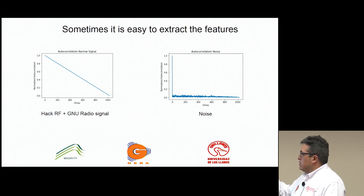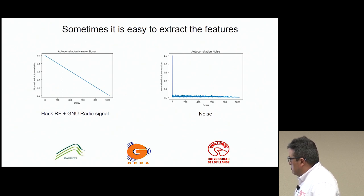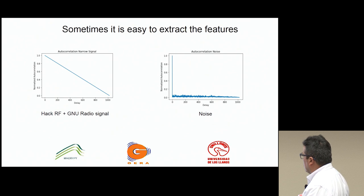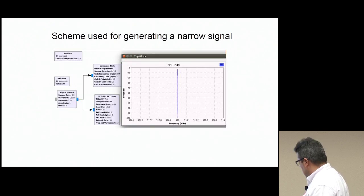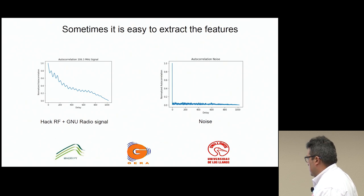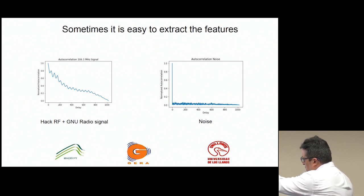Now I will explain why we use the percentiles for the KNN method. Sometimes it is easy to extract features. For example, here we have a HackRF plus GNU Radio signal — we generated a narrowband signal and got the autocorrelation. This graph corresponds to signal and this one to noise. As you can see, it is very easy to distinguish between these two conditions. This one was taken from an FM radio station at 106.3 MHz in my town, and its autocorrelation is very different from the autocorrelation of noise.